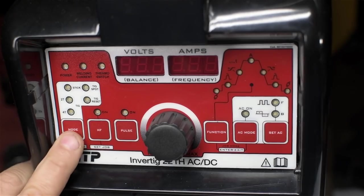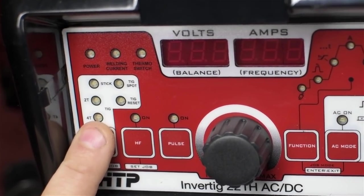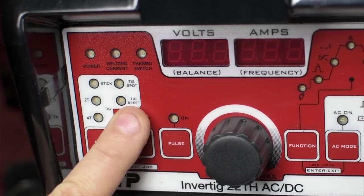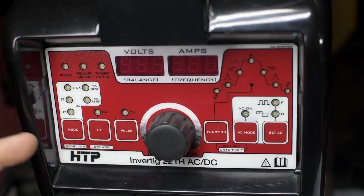The 221 has a better 4T mode than the welders I've used till now. In fact, it has two 4T modes, one they call TIG Reset, and I think it's a little bit of a weird name. Though I haven't really used it yet. Baby steps.